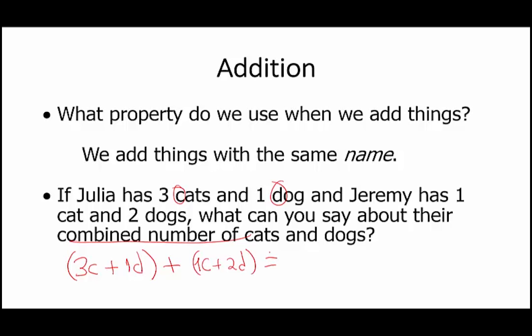Now, when we add this, we know that they have 4 cats, 4C, and that they have 3 dogs altogether. We are adding things with the same name, cats with cats, Cs with Cs, and dogs with dogs, Ds with Ds. Now, of course, we didn't need to write this one here or here, but we wrote it just for clarification.